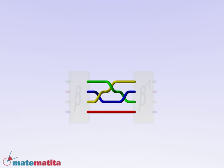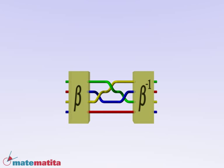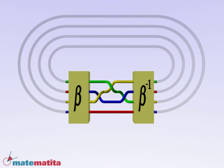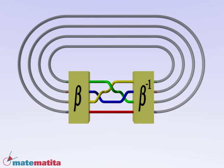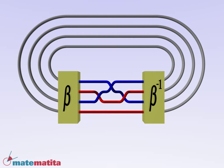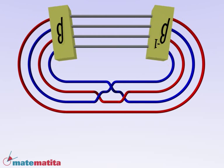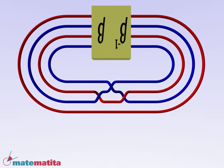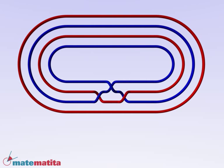If we conjugate a braid with any other, when we close the new braid, we can shift the lateral pieces, so that they cancel out, since one is the inverse of the other. In this way, we get the same knot as closing the original braid.